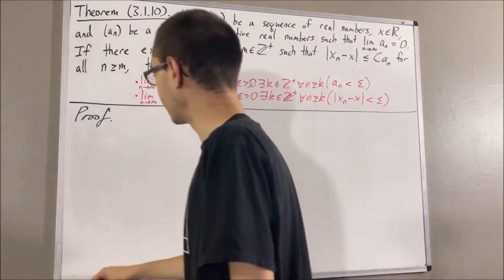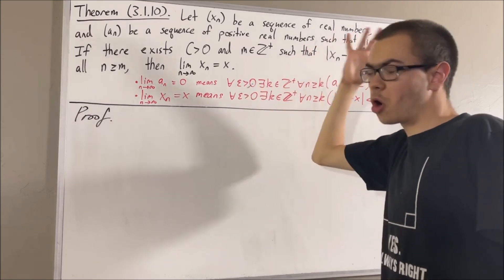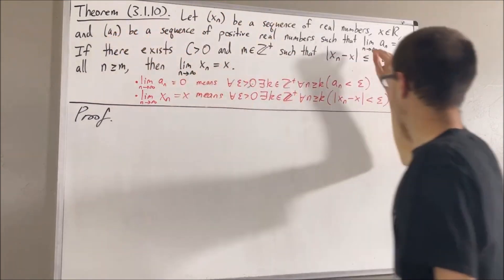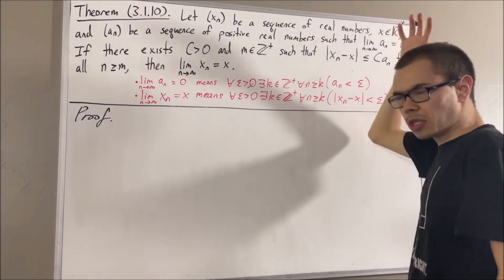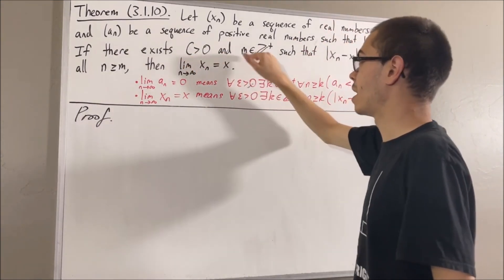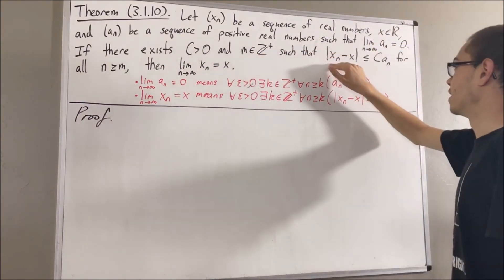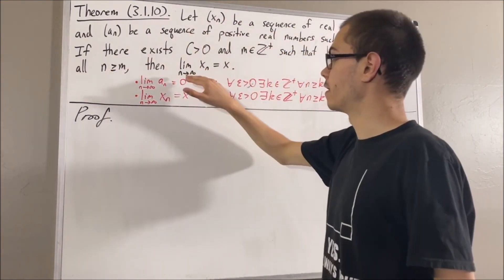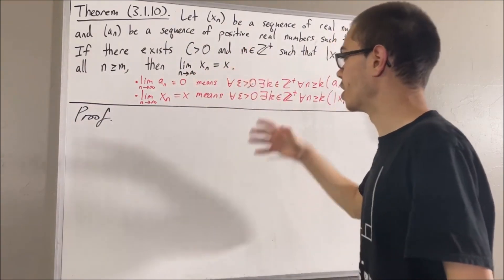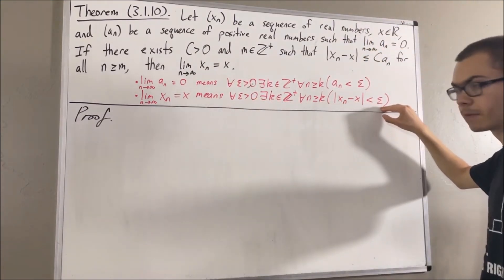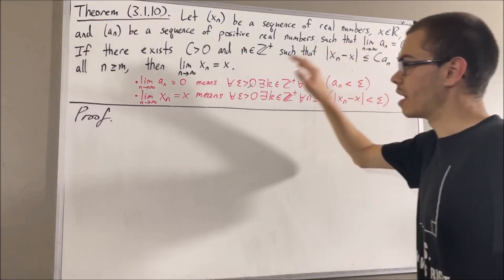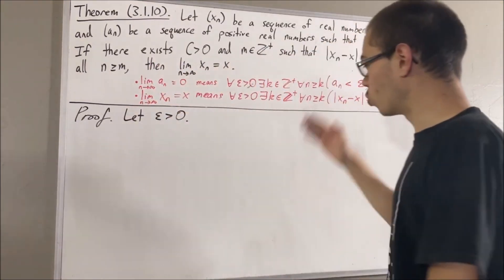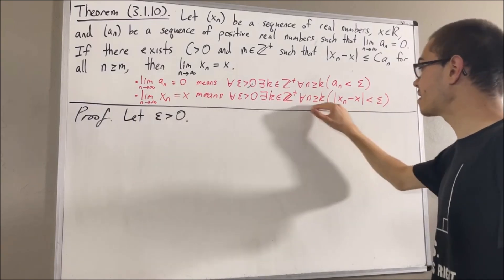Now let's get into the proof. To start out, let's suppose we're already given a sequence xn, a real number x, and a sequence of positive real numbers an that converges to zero. And let's also suppose we already have a positive real number c and a positive integer m, which satisfies this inequality for all positive integers n greater than or equal to m. Our whole goal is to prove that xn converges to x. And since we're trying to prove a statement about every epsilon greater than zero, give me an arbitrary epsilon greater than zero. From here, we want to find a positive integer which makes this statement turn out true.